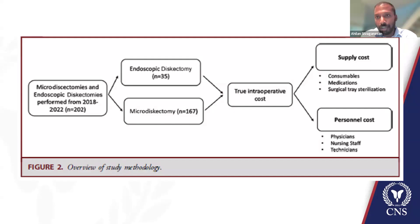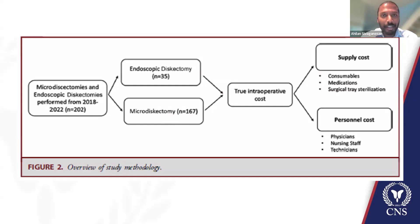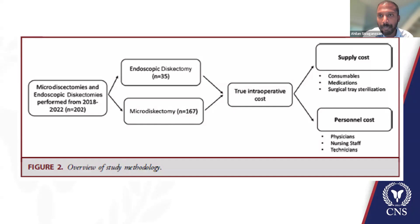The way this worked out is that there were two surgeons at Jefferson doing endoscopic discectomies and everyone else was doing microscopic. That alone is a potential bias — is it just that the two endoscopic surgeons are more or less expensive? And the types of cases amenable to a transforaminal endoscopic discectomy are a subset of the kinds of surgeries that otherwise would be done microscopically.